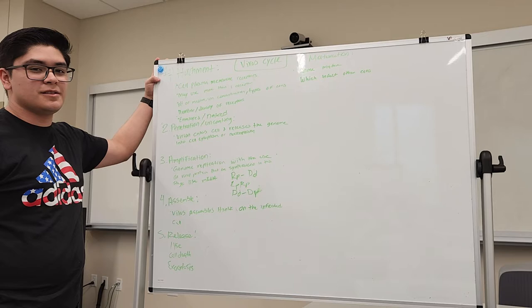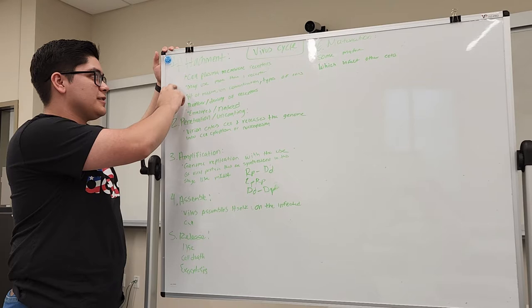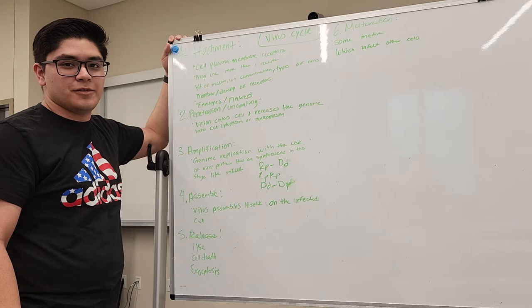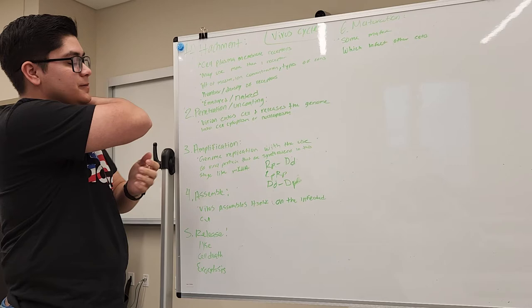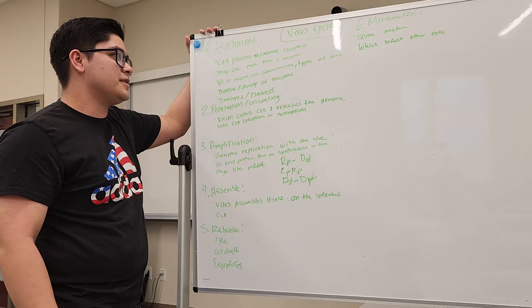The first step is the attachment, which the virus, either enveloped or naked, gets attached to the cell plasma membrane by the receptors. They can use either one or more receptors based on how big they are. Some factors that contribute to the attachments are like the pH of the medium, ion concentration, types of ions, and density and number of receptors.